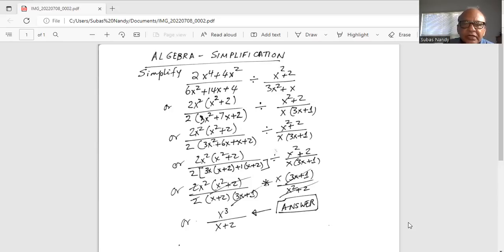So we have 2x square multiplied by x square plus 2 in the numerator of the first expression divided by 2, and then we will split up the 7x inside the parenthesis as 6x plus x.